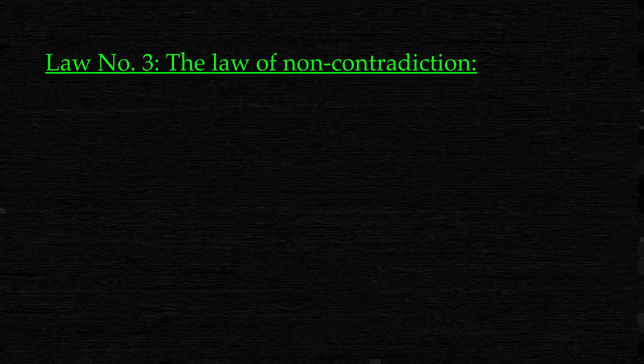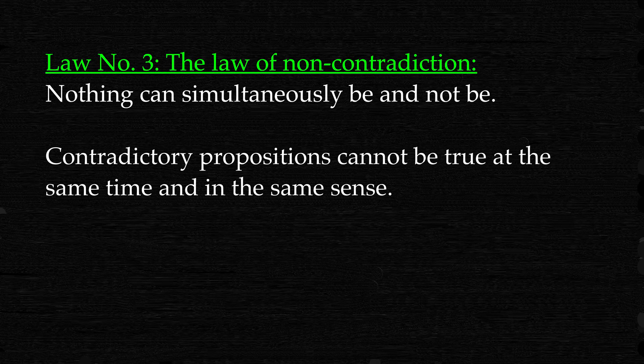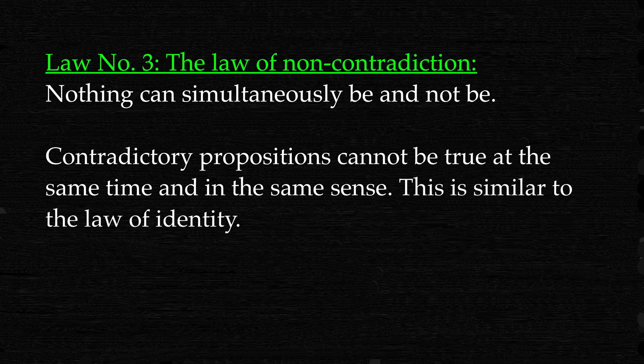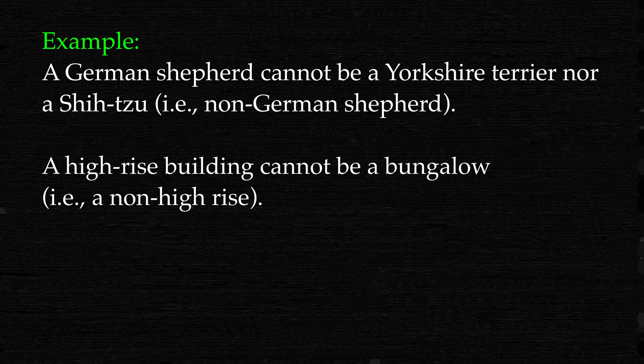Law 3: The law of non-contradiction. Nothing can simultaneously be and not be. Contradictory propositions cannot be true at the same time and in the same sense. This is similar to the law of identity. Example: a German Shepherd cannot be a Yorkshire Terrier nor a Shih Tzu, i.e. a non-German Shepherd. A high-rise building cannot be a bungalow, i.e. a non-high-rise.